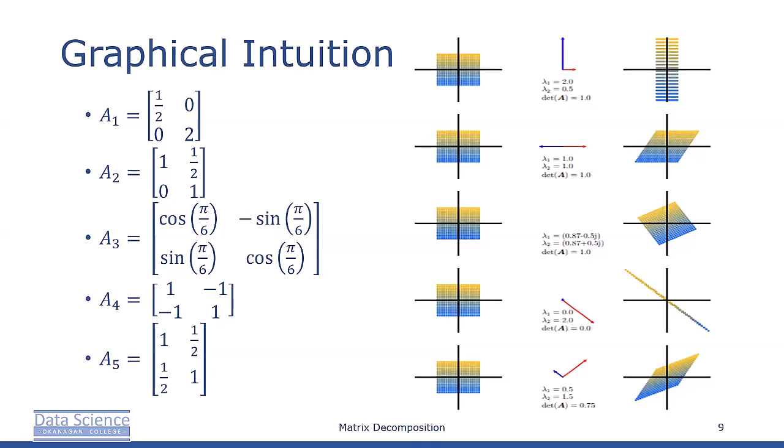For the third mapping, we perform a simple rotation — 30 degrees counterclockwise. Here, we have complex eigenvalues, which reflects the fact that the mapping is a rotation rather than a shear or a stretch. No eigenvectors are drawn, because an eigenvector by its very nature remains unchanged when you apply matrix A to it. But since it's a rotation, every vector is changed.